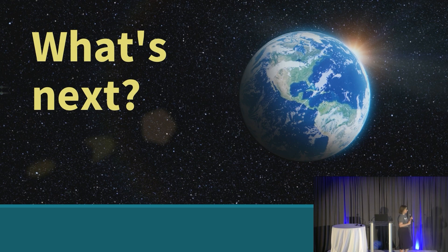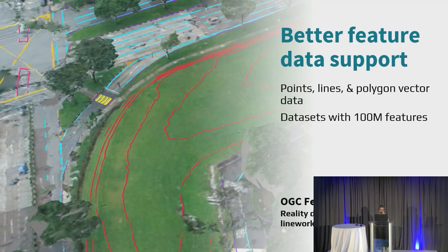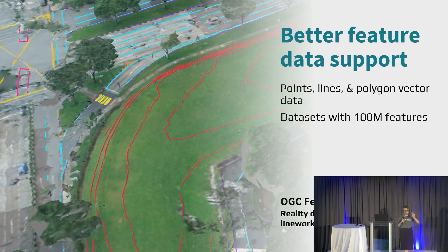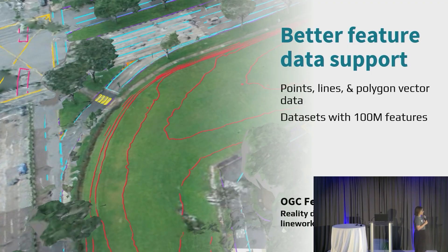We also want to touch on what is coming down the pipe for the near future. One of the biggest things we are working on is better feature data support. When we say feature data, we're talking about points, lines, polygons — things coming from services like the OGC Features API. For example, this reality data is classified with AI, which pulled out road line work and terrain contour lines. We want to support really large datasets with that feature data — in one case, we are targeting something with over 100 million features — making sure everything runs smoothly at 60 frames per second.